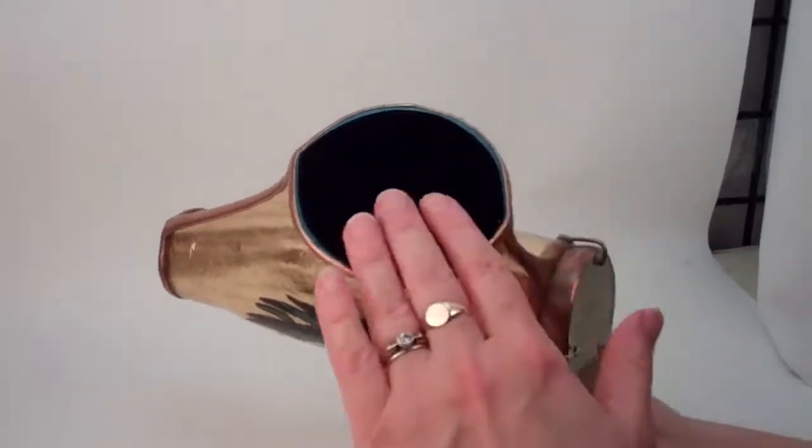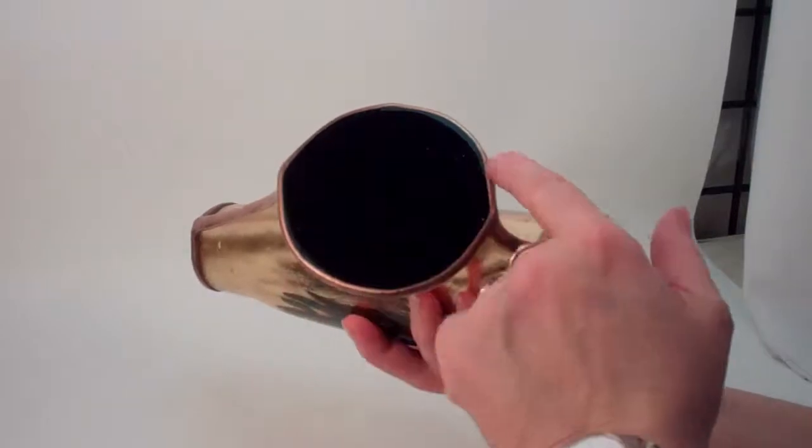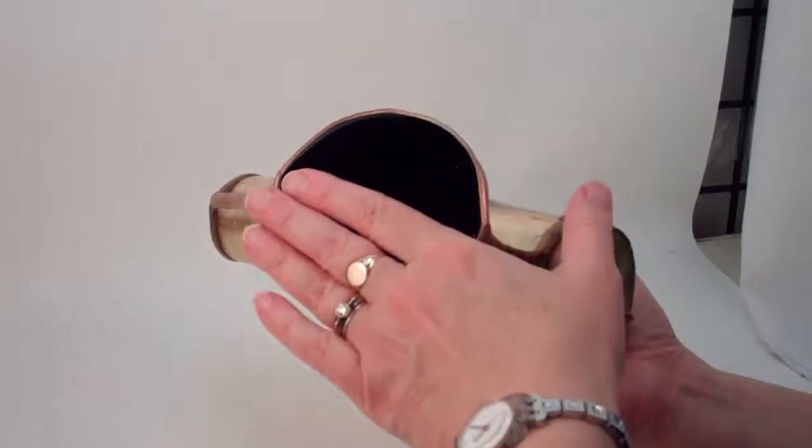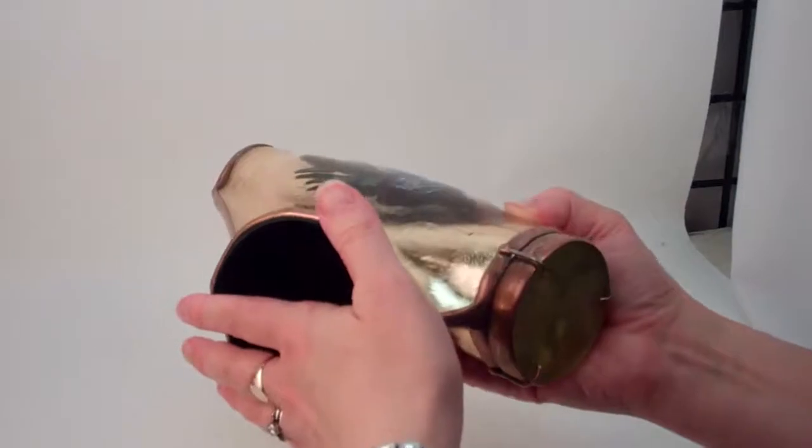Charles has added black velvet to the bottom to give a cushion to the black glass that seals the bottom of the kaleidoscope.